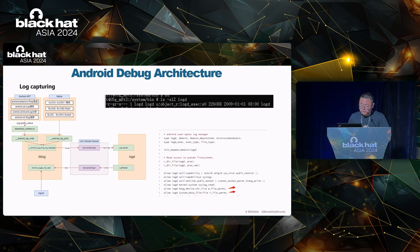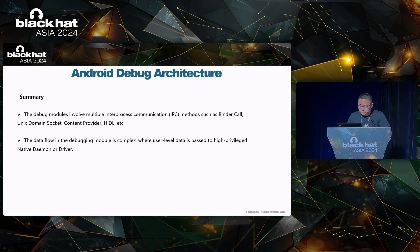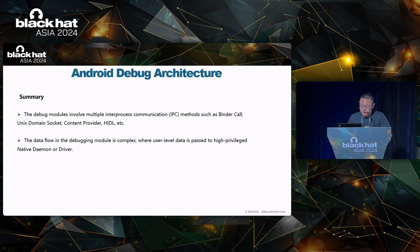Through the SELinux rules of logD, we can see that logD itself has permission to read kernel logs and system files. Based on analysis of the Android debug architecture, we can draw the following conclusions: the debug module involves complex IPC communication including binder calls, Unix domain sockets, content providers, and HIDL. The data flow within the debug modules is intricate — user-level data is progressively passed to higher-privilege native daemons and drivers.